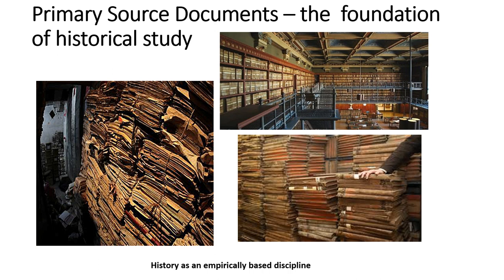Ninety-five to ninety-eight percent of what historians use to know anything about the past at all are primary source documents. If there weren't hundreds and thousands of historians dedicated to primary source document research, we'd know nothing — or a tiny, tiny bit — about the past. So what I do is cheat: I read books written by brilliant researchers and historians who do go through the stacks in painstaking, often boring fashion, until they find something.